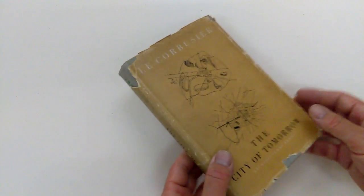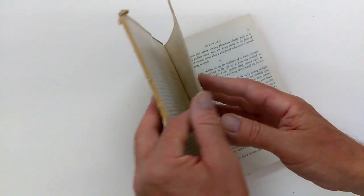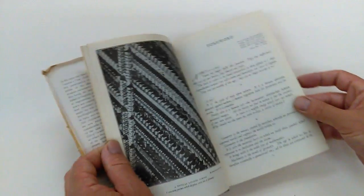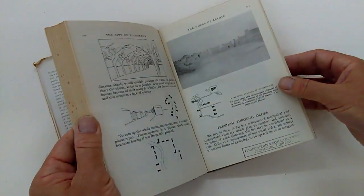Right, ladies and gentlemen, a nice working copy of Le Corbusier's The City of Tomorrow, the second English edition published by the Architectural Press in 1947 of the book which appeared in 1924.